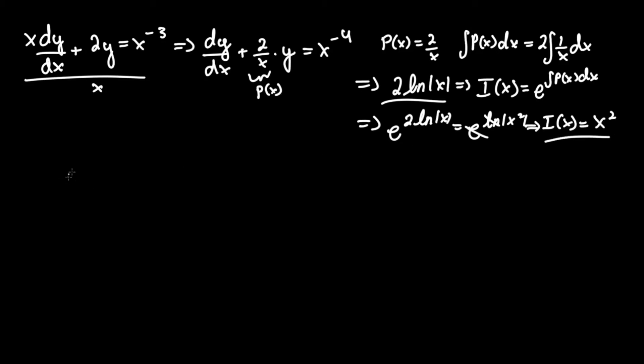Now we multiply the integrating factor by everything in the equation. That becomes x^2*dy/dx + (2/x)*y*x^2, which becomes 2x*y since the x cancels on the bottom leaving one remaining. This equals x^(-2), since x^2 times x^(-4) gives x^(-2).